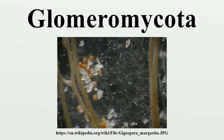Glomeromycota is one of seven currently recognized divisions within the kingdom fungi, with approximately 230 described species. Members of the Glomeromycota form arbuscular mycorrhizas with the roots or thalli of land plants. Geosiphon piriformis forms an endocytobiotic association with Nostoc cyanobacteria. The majority of evidence shows that the Glomeromycota are symbionts with land plants for carbon and energy, but there is recent circumstantial evidence that some species may be able to lead an independent existence.